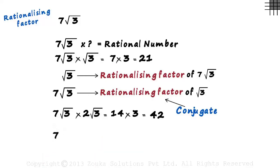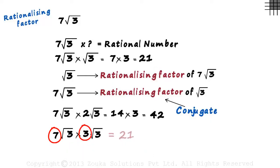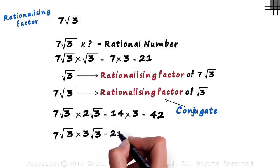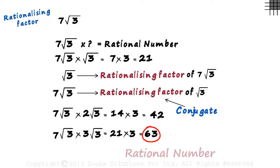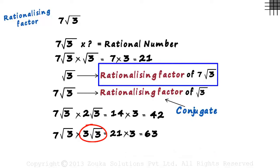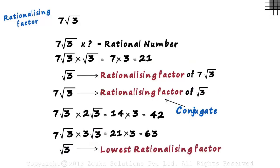Now let's try multiplying 7 root 3 with 3 root 3. 7 multiplied by 3 is 21, and root 3 multiplied by root 3 equals 3, giving us 21 multiplied by 3 which equals 63. And 63 is also a rational number, so 3 root 3 is also a rationalizing factor of 7 root 3. This means an irrational number has infinite rationalizing factors, and root 3 is the lowest positive rationalizing factor of 7 root 3.